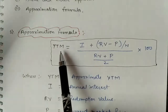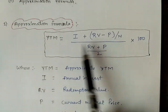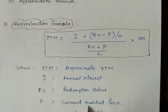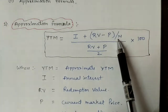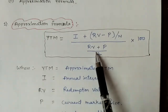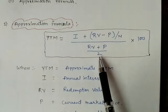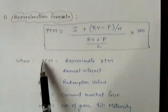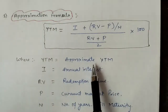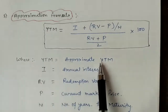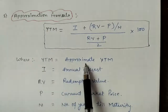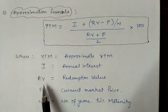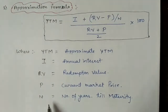The approximation formula is: Approximate YTM = [I + (RV − P) / N] / [(RV + P) / 2] × 100. This is also known as the average rate of return, which is why it is divided by 2. Here, I is the annual interest, RV is the redemption value, P is the current market price, and N is the number of years till maturity. We use the word 'approximate' here because this is not the actual YTM.